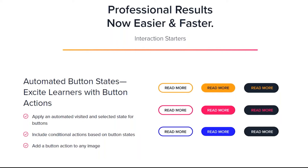We have automated button states and button groups. This was a very popular feature in our early release and previews. Developers are finding this really helps streamline development — using buttons not just for navigation, but for creating interactivity. And now you can even add an image and make a button, so if you want to click on a character and change a character pose, you can do that as a button.